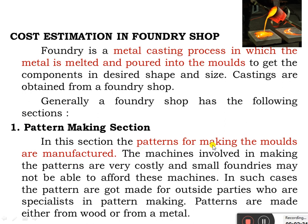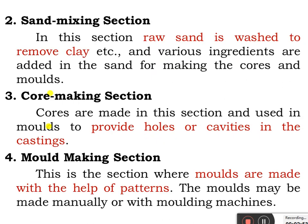In the pattern making section, the patterns used for making the molds are manufactured. The machines involved in making the patterns are very costly, and some small foundries may not be able to afford them. In such cases, the patterns are obtained from outside parties. The next section is the sand mixing section, where the raw sand is washed to remove clays and other impurities, and various ingredients are added to the sand for making the cores and molds.